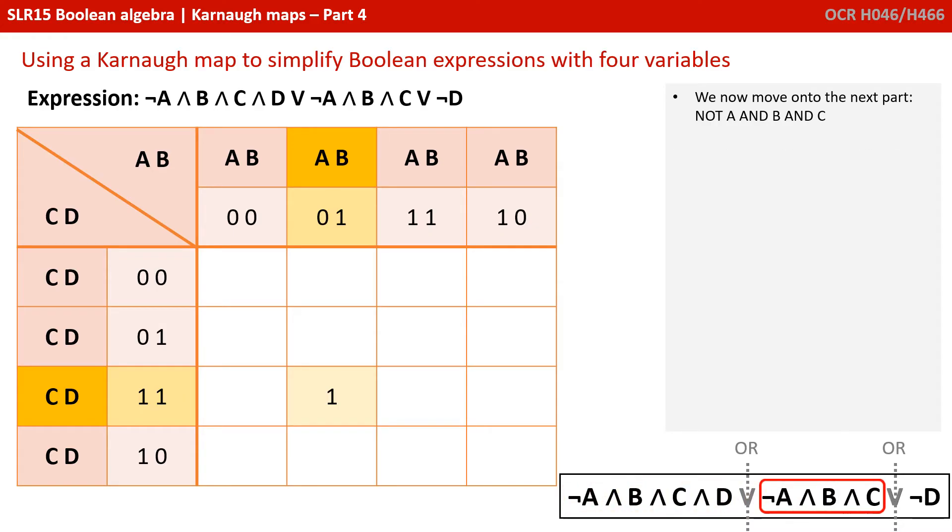We now move on to the next part, not A and B and C. A must be 0, it's not A, while B and C must be 1. And there are two cells where this is true, so we put a 1 in each of those.